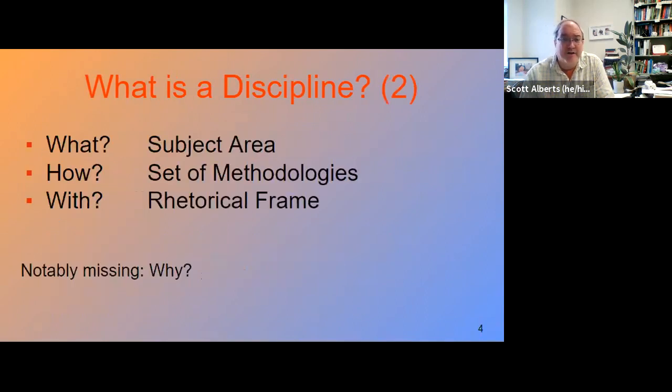I'm going to be using a model that was proposed by Tanya Augsburg. She's a professor of interdisciplinary studies at Arizona State University, and she's laid out this model. And here at Truman in the last years, we've sort of added to it a little bit. But she's a nice shorthand way of discussing what a discipline is. And even in the places where it doesn't work well, I think it helps us to think about it.